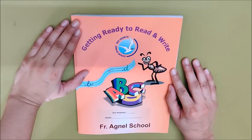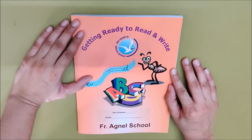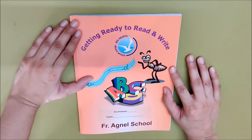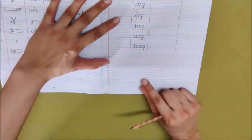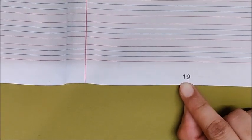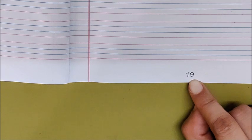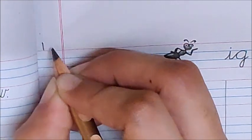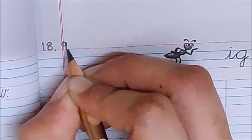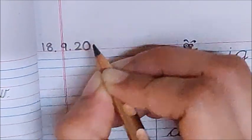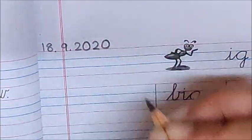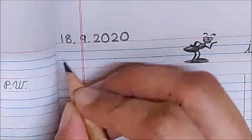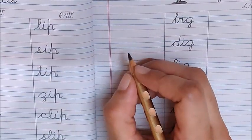Hello children, welcome back. Today we are going to do writing again in our orange book getting ready to read and write. So open page number 19. See I have opened page number 19. One 10 and nine extra is number 19. Now children write down today's date. Today is September 18, 18 dot, 9 dot, 20, 20. Done children? Good. Now children below the date put a dot.